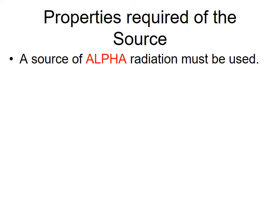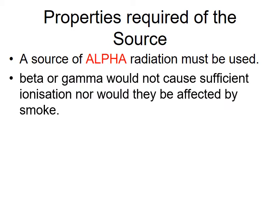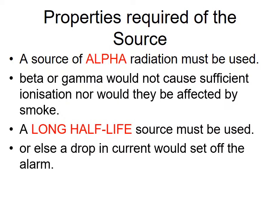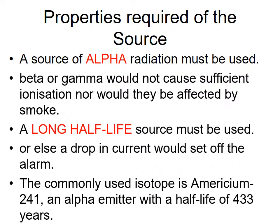In this case, the source required should be alpha radiation, because it's slow-moving and will get picked up by the smoke particles and stop. If you use beta or gamma radiation, it would not cause sufficient ionisation or would not be affected by the smoke. A long half-life source is needed, otherwise a drop in current would set off the alarm. Americium-241, an alpha emitter with a half-life of 433 years, is usually used.